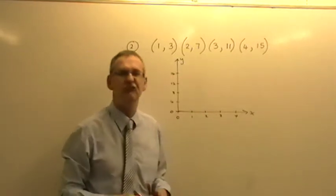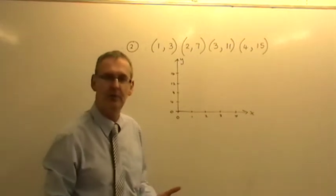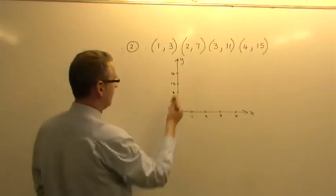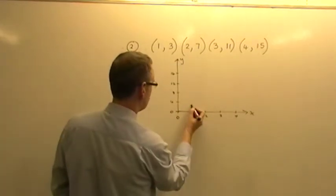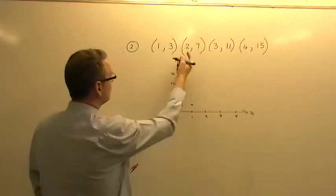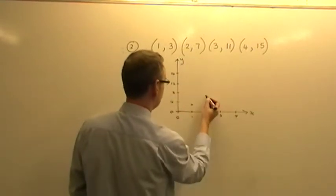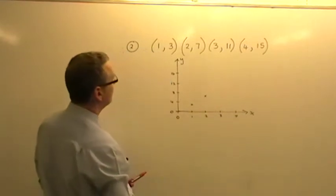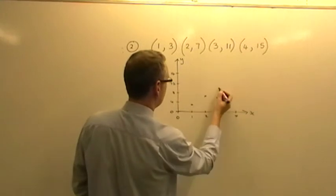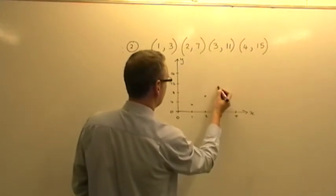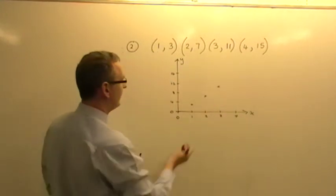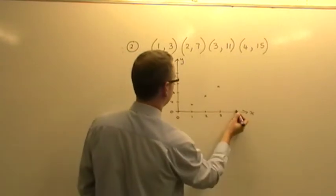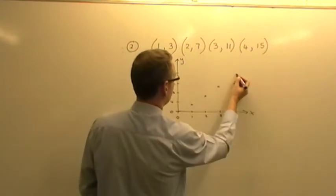And I will plot reasonably accurately these 4 points. 1, 3: 1 across, 3 up, is about there. 2, 7: 2 across, 7 up, is about there. 3, 11: 3 across, and 11 up, is about there. And then 4, 15: 4 across, and 15 up, is about there.